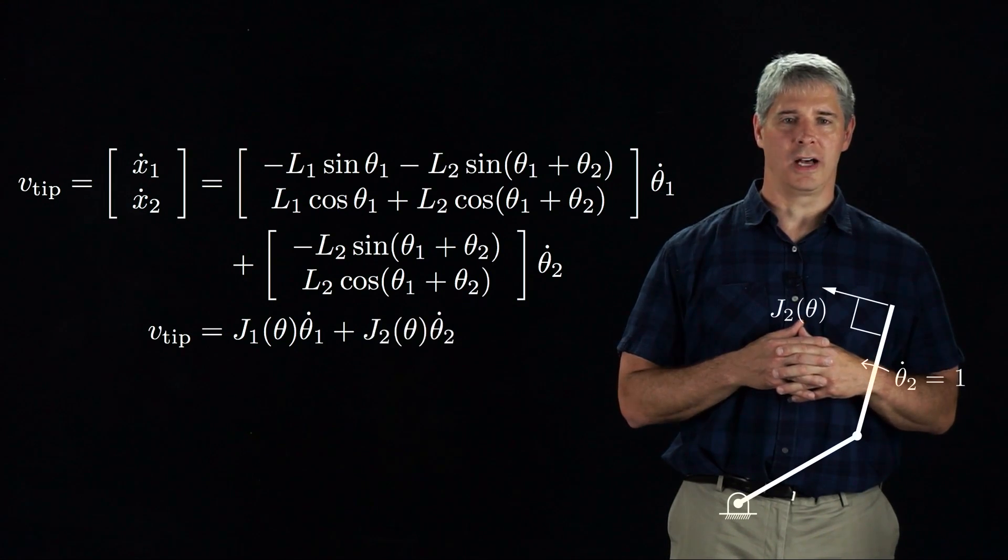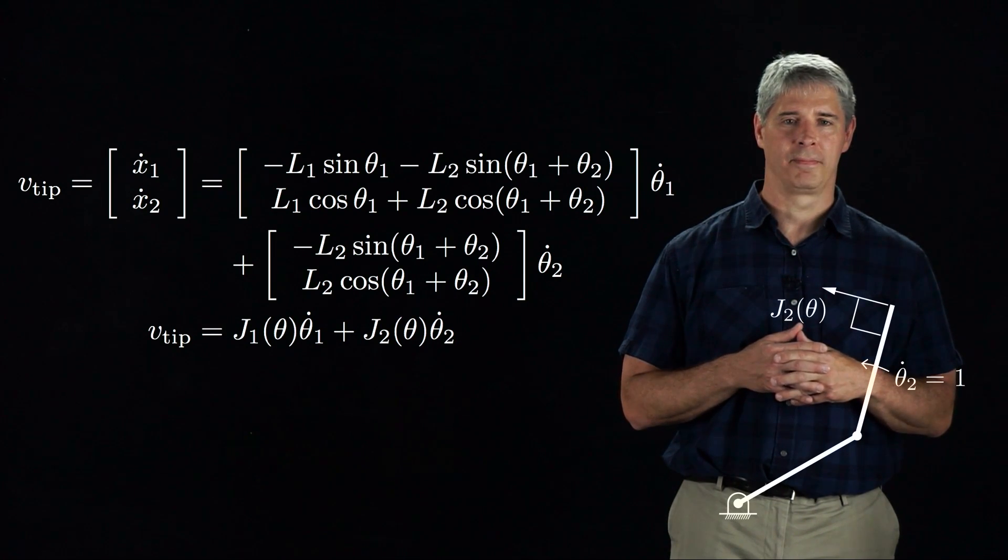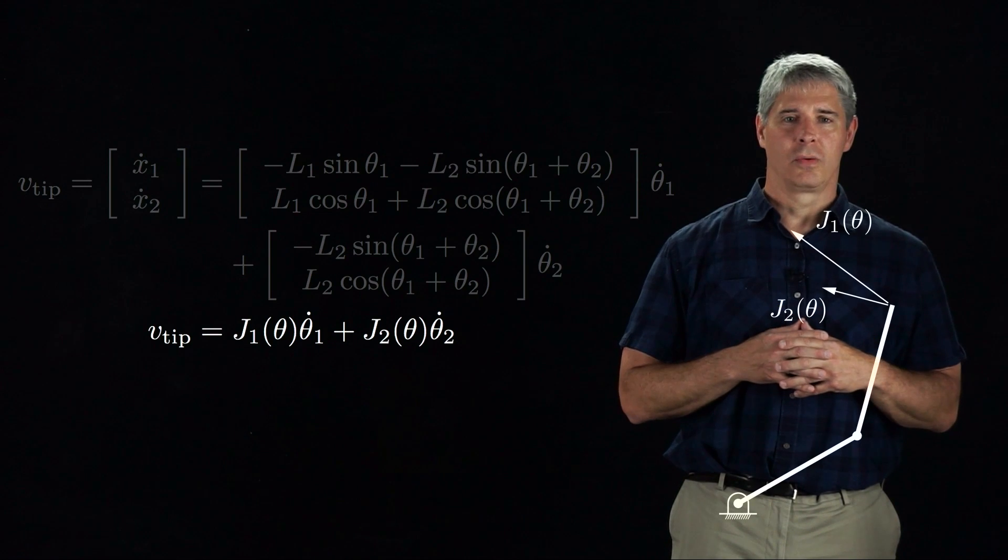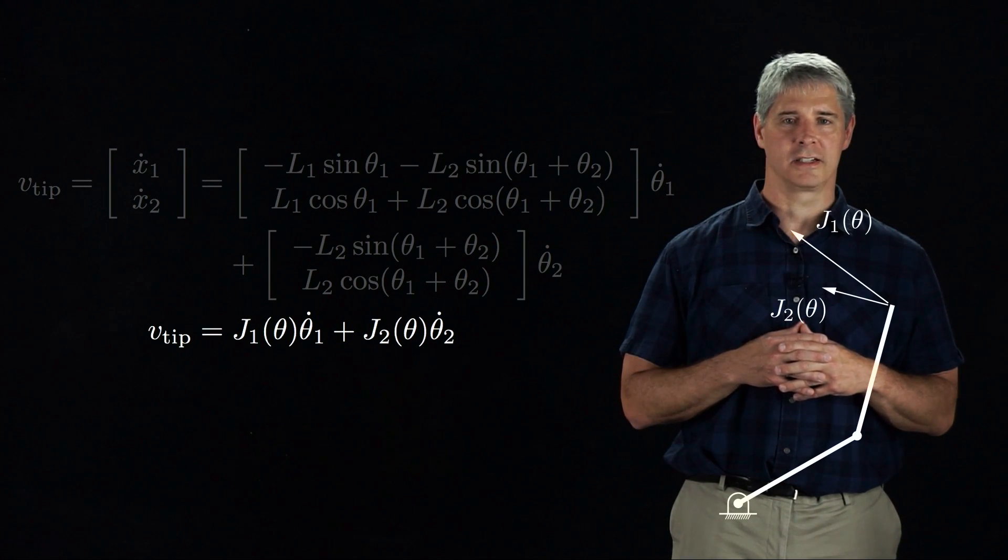Similarly, J2 is the velocity of the end effector when joint 2 rotates at unit speed while joint 1 is kept constant. Plotting them both, we see that J1 and J2 form a basis for the space of linear velocities of the end effector.